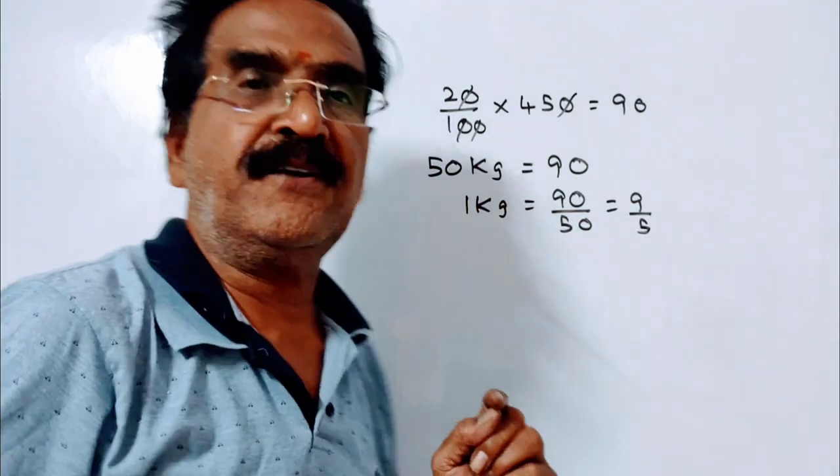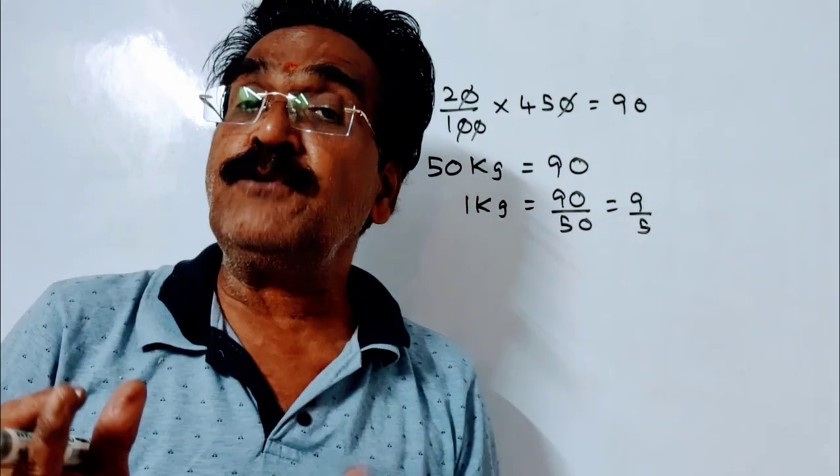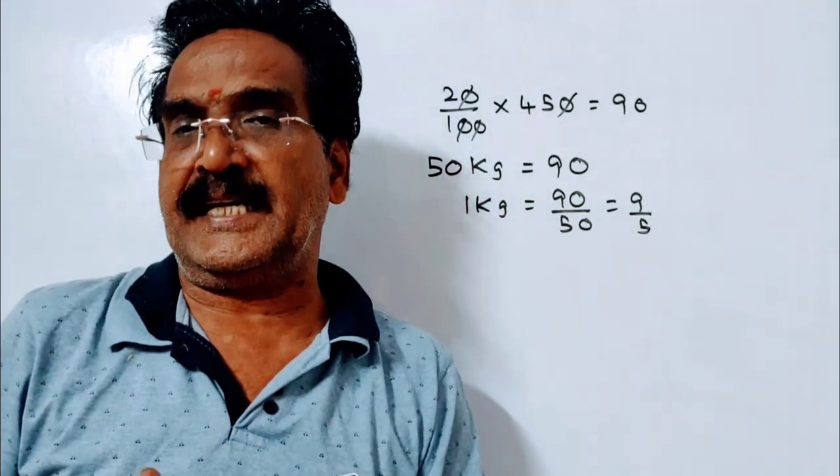Friends, this 9 by 5 is the reduced price of the rice per kg. But friends, we want the original price of the rice per kg.